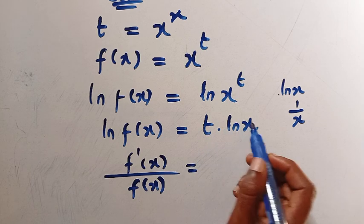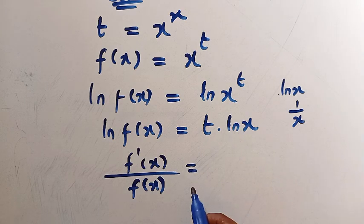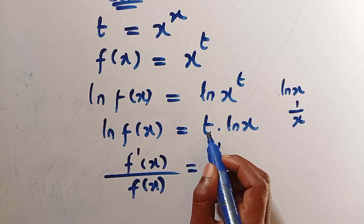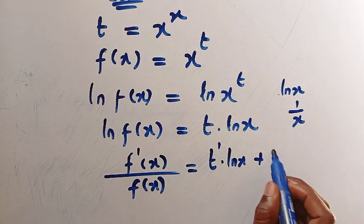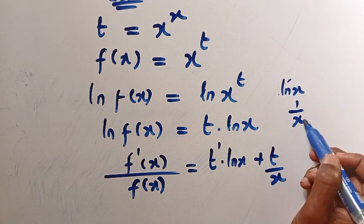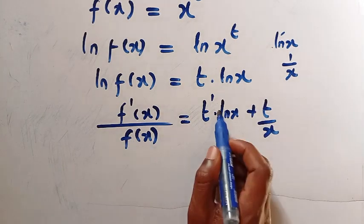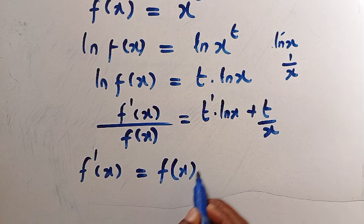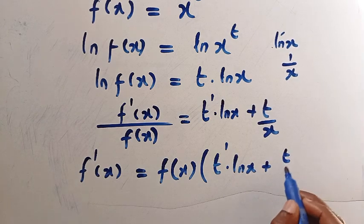Using the product rule on the right side: keep ln x and differentiate t, giving t prime multiplied by ln x, then plus keep t and differentiate ln x, giving t over x. So f prime of x divided by f of x equals t prime times ln x plus t divided by x. Cross-multiplying, we have f prime of x equals f of x times the bracket of t prime multiplied by ln x plus t divided by x.